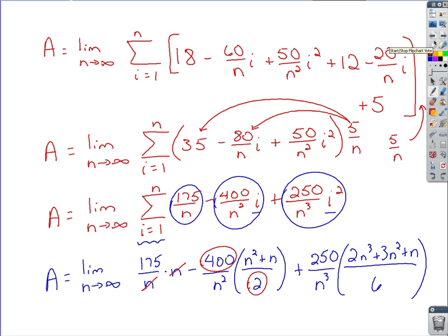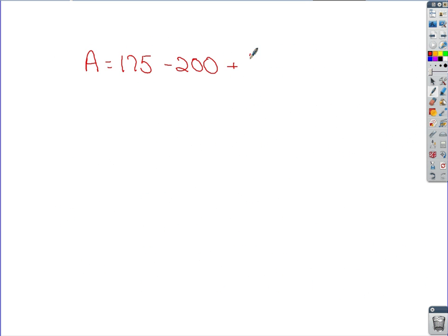And then finally, for this last piece here, we're going to take 250, multiply by 2, and divide by 6. Again, that's all we have to do because of what we know about the canceling. If you take 250 times 2, get 500 over 6. So we're adding the 500 over 6, or if you want to reduce that, 250 over 3.